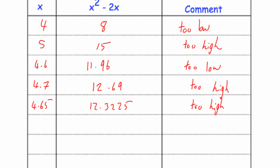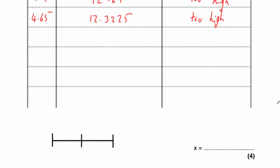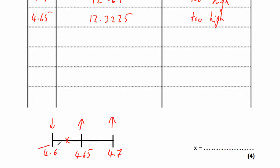We know 4.6 is too low, 4.7 is too high, and the checker 4.65 is also too high. So on our number line, the answer will be in between 4.6 and 4.65, meaning it's closer to 4.6 than it is to 4.7. So our answer is 4.6.